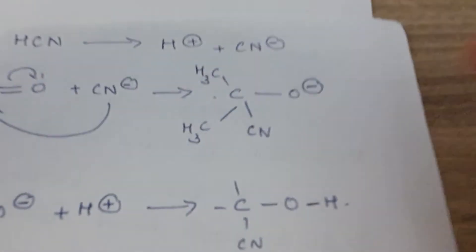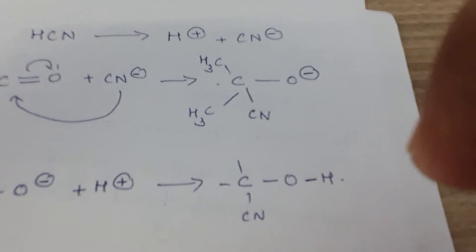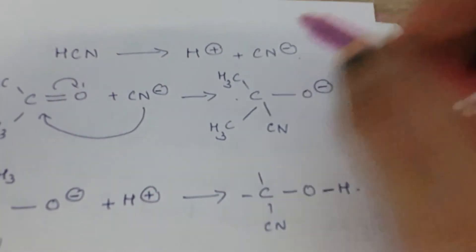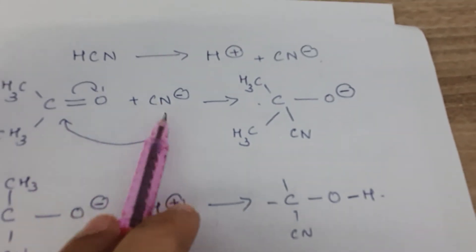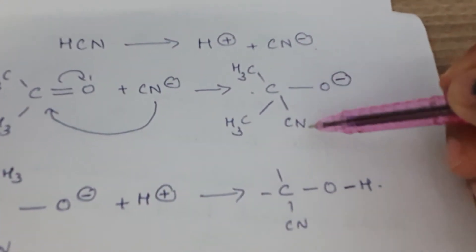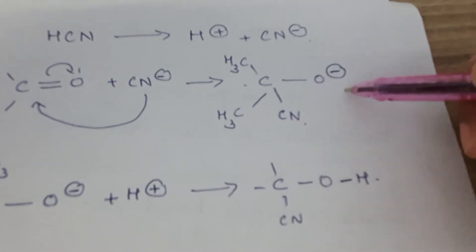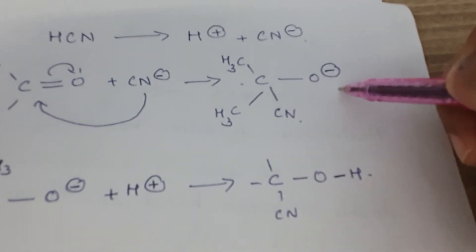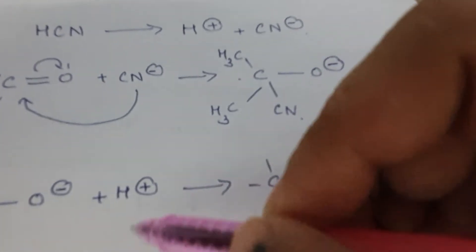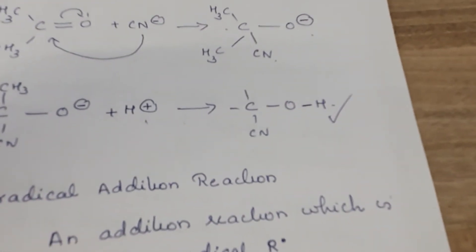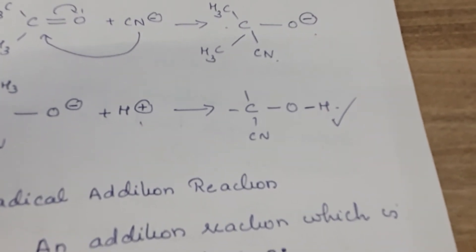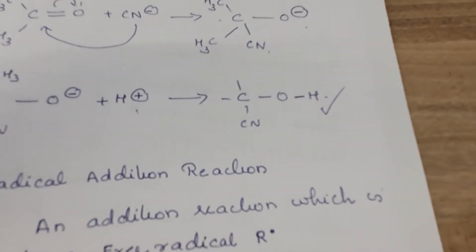A clear example is carbonyl compounds such as ketones and aldehydes undergoing nucleophilic addition. For example, HCN ionizes to H+ and CN−. The CN− attacks the carbonyl carbon of acetone. A bond forms between CN− and carbon, oxygen gets a negative charge, then H+ reacts with the alkoxide to form a stable cyanohydrin product.